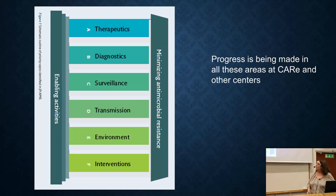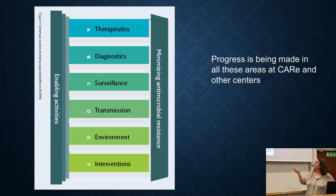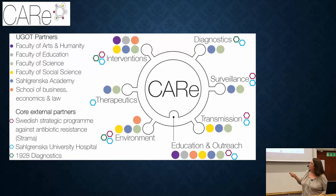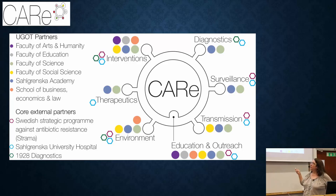The EU has split up the types of approaches that need to be done to deal with antibiotic resistance into six different categories: therapeutics, diagnostics, surveillance, transmission, environment, and interventions. CARE at Gothenburg University is organized along these themes as well. We have each of the themes, and in addition we have education and outreach — that's why we're doing this course. We have members from a large number of different faculties at the university associated with all of these.